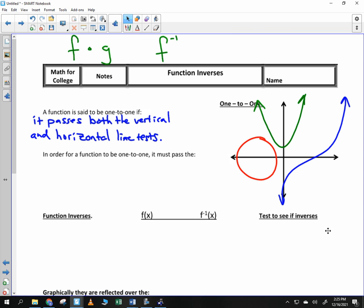Does that pass the vertical line test? Does it pass the horizontal line test? So it is both. So it's a function, and it's one-to-one.